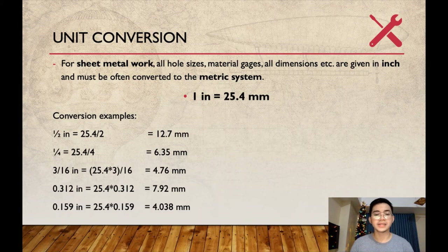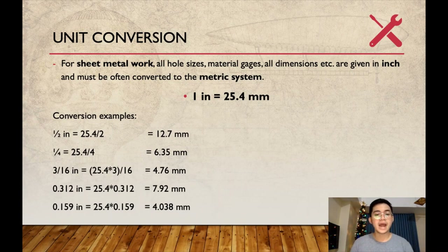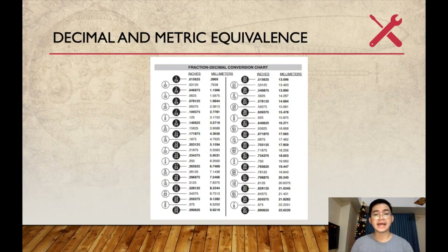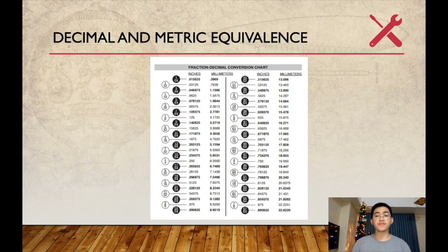Here are some examples of conversion in the metric system: 1/2 inch is equal to 25.4 divided by 2, giving you 12.7 mm. And lastly, we have decimal and metric equivalents shown in the table. Thank you for listening. Fly high, Aviators!